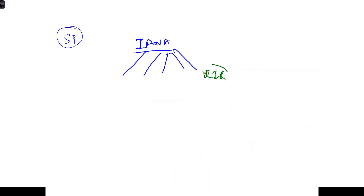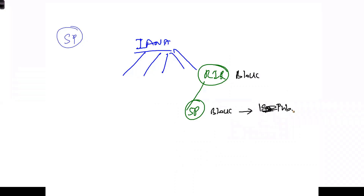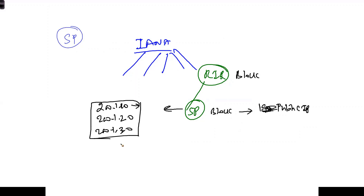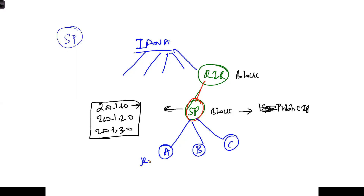Another example is a service provider network. IANA reserves IP addresses to regional internet registries (RIRs), which allocate them to service providers as blocks. Say a service provider gets a block of public IPs like 200.1.1.x, 200.1.2.x, and 200.1.3.x — full Class C subnets. The service provider then allocates them to customers. If customer A needs just 10 public IPs, customer B needs 4, and customer C needs just 2, the problem is clear.